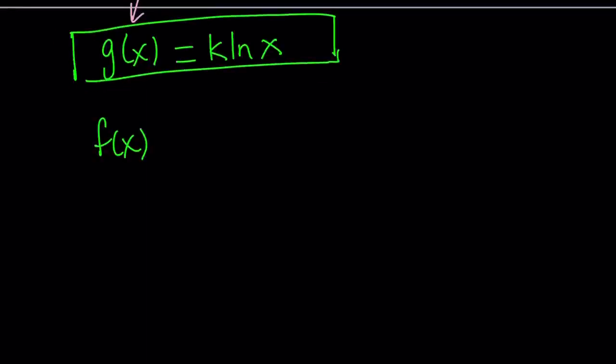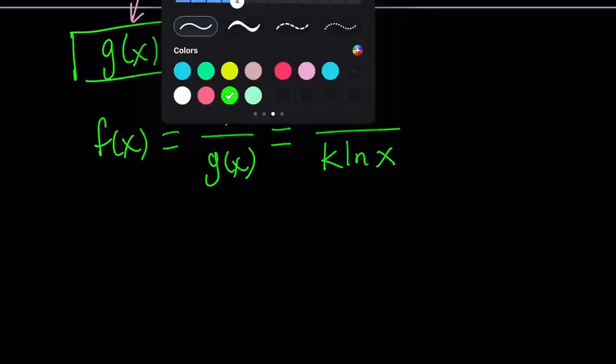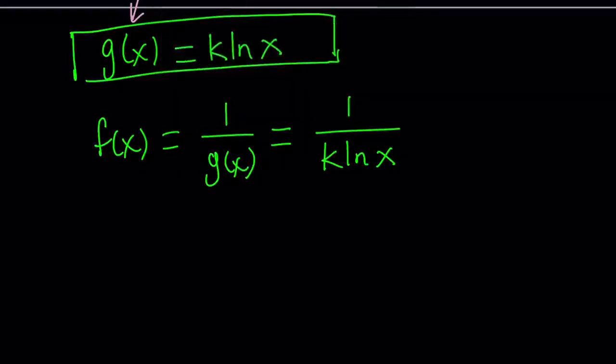And how would that work? We know that f of x can be written as 1 over g of x. So from here, f of x can be written as 1 over g of x. Remember, we talked about this before. And that will be 1 over k times ln x. But remember, k is a constant. So can I not replace 1 over k with something else? Of course, you can do the following as long as k does not equal 0. And obviously, you don't want k to be 0 because then you would have something undefined.